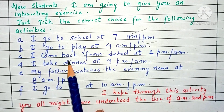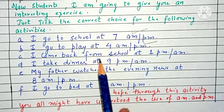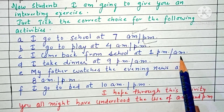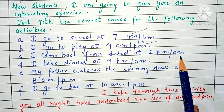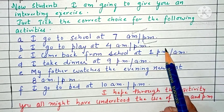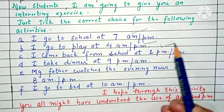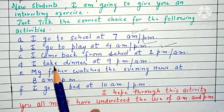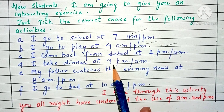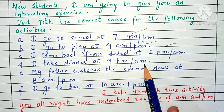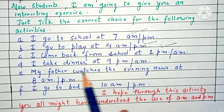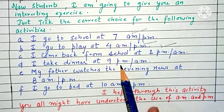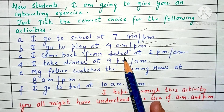Part C: I come back from school at 1 PM or AM. The correct choice is 1 PM. Part D: I take dinner at 9 PM or AM. It is dinner time, so the correct option is 9 PM.